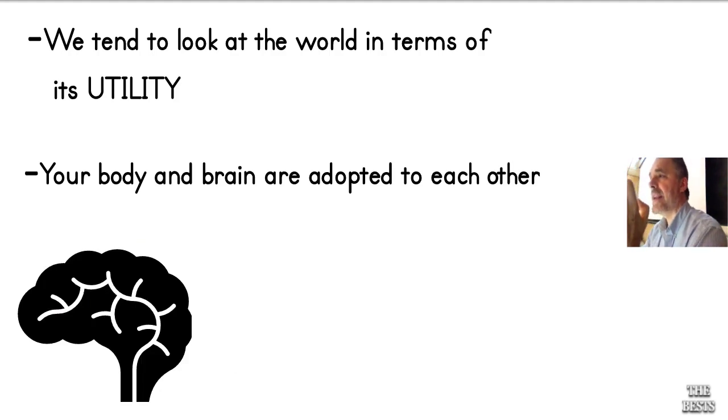Our brain is part of our body. Our brain is adapted to our body, and our body is adapted to our brain. They co-evolved, and the kind of brain we have is the sort of brain that a creature that stands upright and can manipulate the world has.